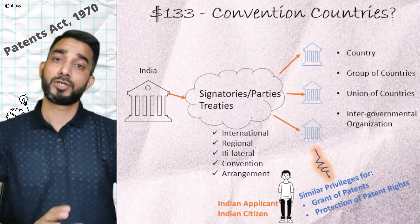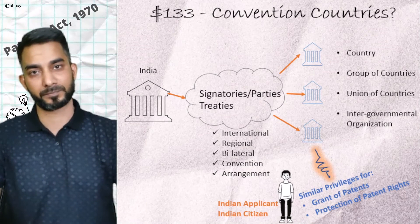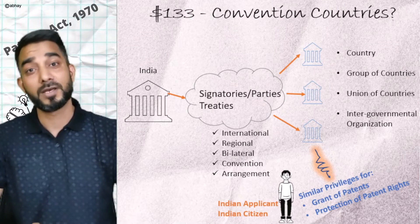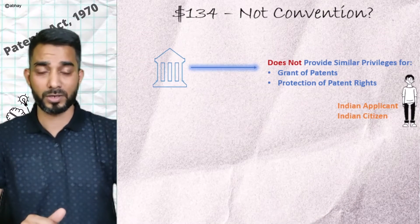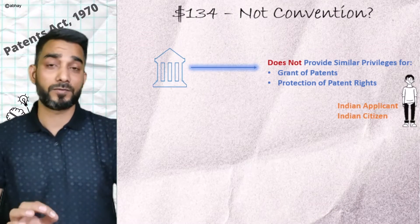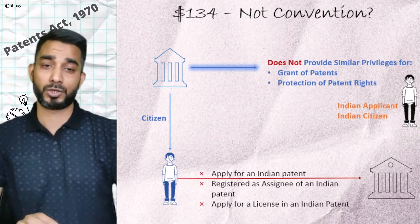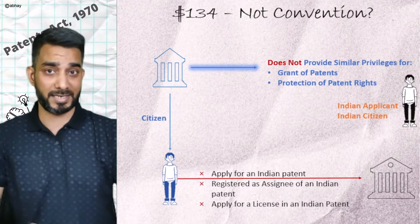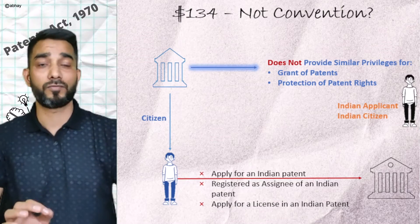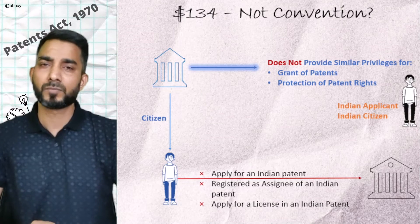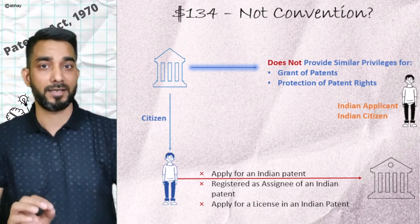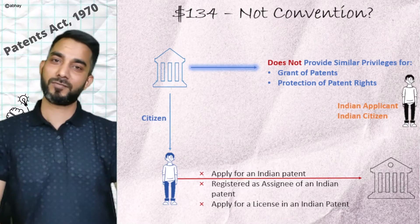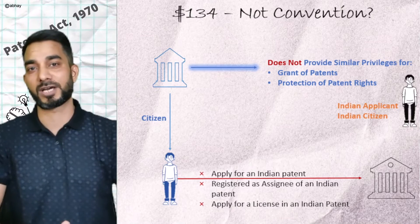What about countries that do not provide such privileges? As per Section 134, citizens of such countries are not allowed to apply for an Indian patent, be named as assignee or proprietor of any Indian patent or application, or take a license under any Indian patent. It's tit for tat. With this we have enough information about what convention countries are and what they are not.